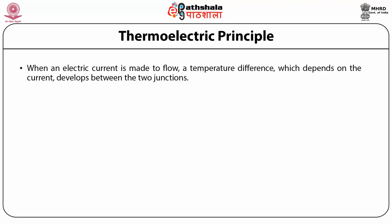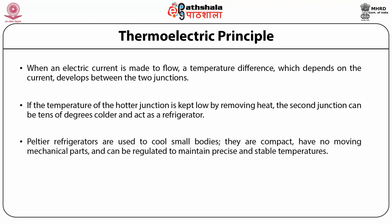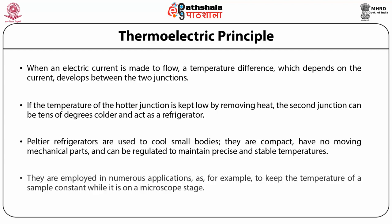When an electric current is made to flow, a temperature difference that depends on the current develops between the two junctions. If the temperature of the hotter junction is kept low by removing heat, the second junction can be tens of degrees colder and act as a refrigerator. Peltier refrigerators are used to cool small bodies. They are compact, have no moving mechanical parts, and can be regulated to maintain precise and stable temperatures. They are employed in numerous applications, for example, to keep the temperature of a sample constant while it is on a microscope stage.